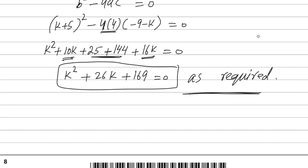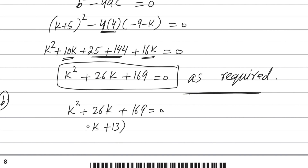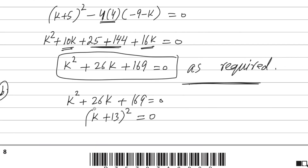For the second part, we recognize that k squared plus 26k plus 169 is the complete square of (k plus 13). You can verify: k squared, plus 2 times 13 times k gives 26k, and 13 squared gives 169. So (k plus 13) squared equals 0. Taking the square root of both sides gives k plus 13 equals 0, therefore k equals negative 13.